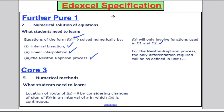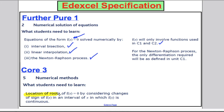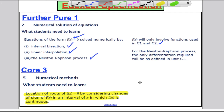The big idea behind this actually comes from a Core 3 topic, which some FP1 students have not done. In Core 3, we're asked to locate roots of f(x) by considering changes of sign of f(x) in an interval of x in which f(x) is continuous. I'm going to spend this video briefly going through that idea — what I call the change of sign rules — before we start the techniques required for Further Pure One.